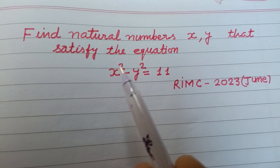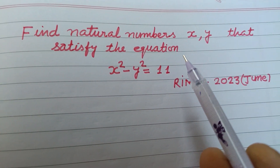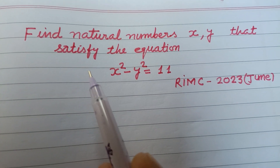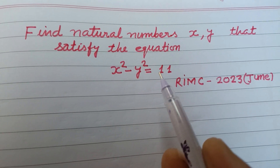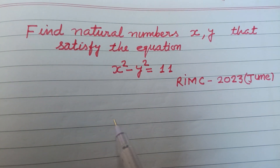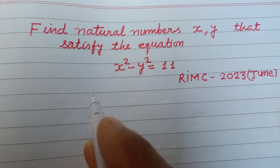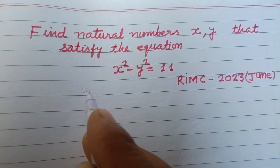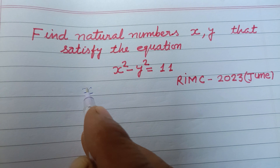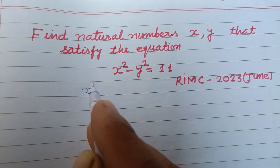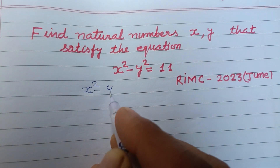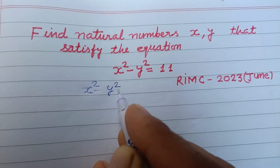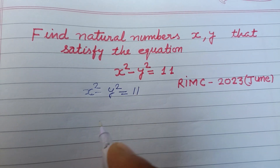Find the natural number xy that satisfy the equation x squared minus y squared equal to 11. So here the given equation is x squared minus y squared equal to 11.